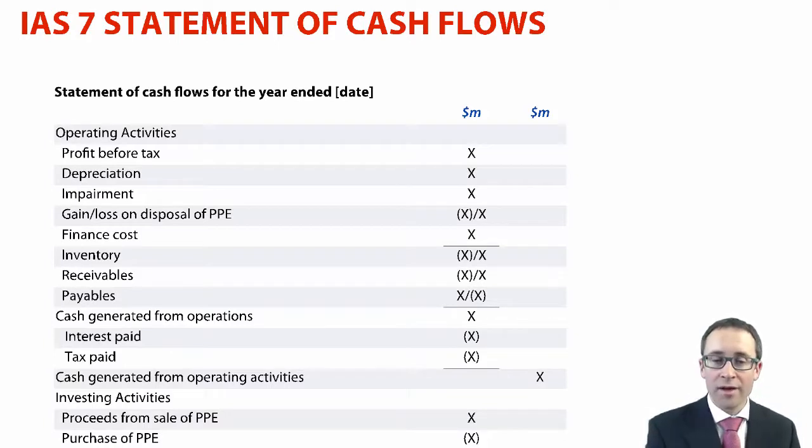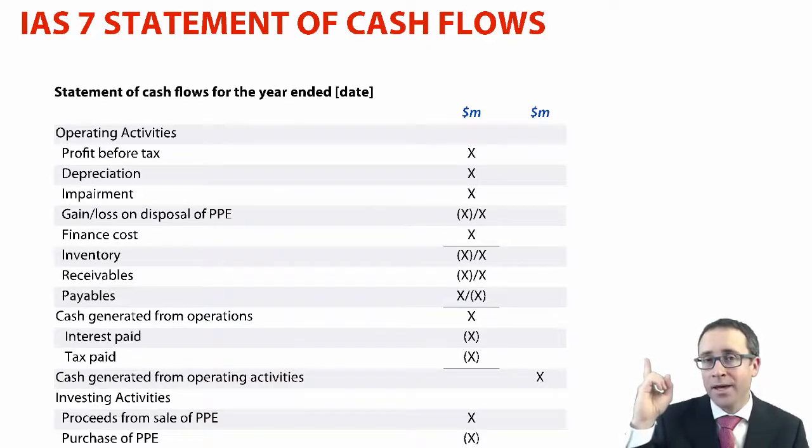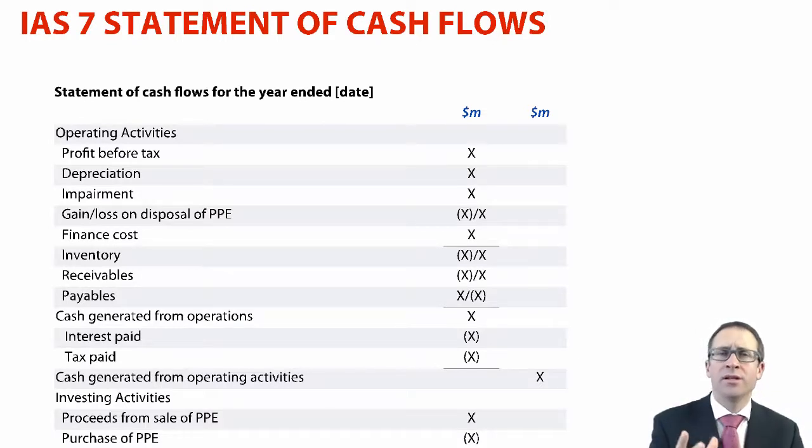What you've got there on that first page in the chapter is looking at a pro forma statement of cash flows. You are not going to have to produce a full statement of cash flows within the exam. But what you could be expected to do is, firstly, calculate any of the figures that appear up in there. So, any of those X's. But what you would also be expected to do as well is to understand what goes within each heading. So, maybe a non-computational aspect.